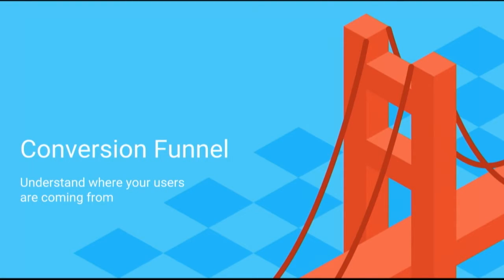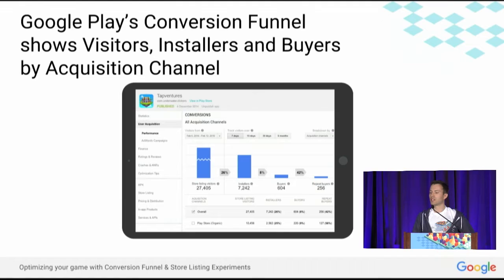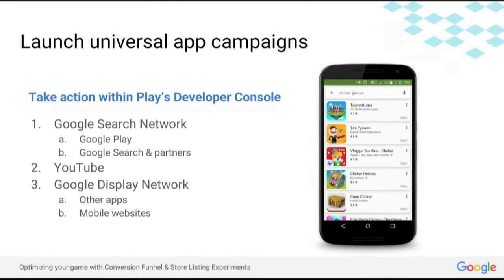Now to challenge number two: how to get a better understanding of users by source. Let's talk about Google Play's conversion funnel. The conversion funnel simply shows you visitors, installers, and buyers by acquisition channel. If you would like to take action to increase the number of installers, you can launch a universal app campaign directly from Google Play's developer console. Ads will be shown on Google's search network, including Google Play, YouTube, and Google's display network.